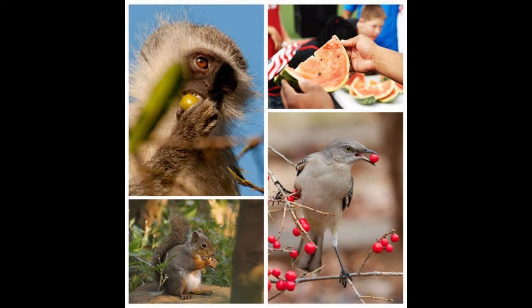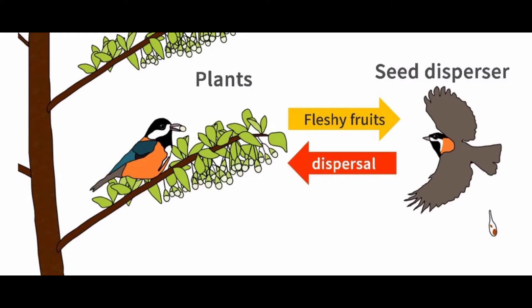Animals such as squirrels, monkeys, and even certain birds eat the fruits and seeds of some plants. Sometimes they throw away the seeds to far-off places. At other times, they eat the seeds which are later removed through their feces. In this way, these animals help to scatter seeds.